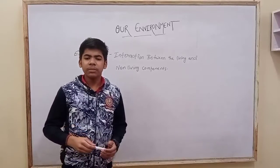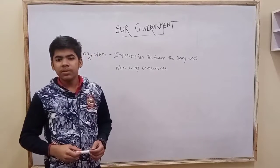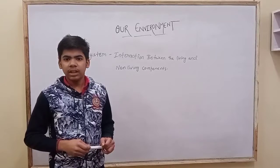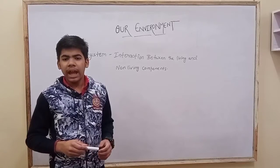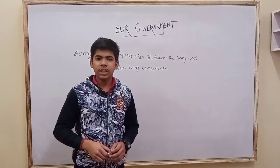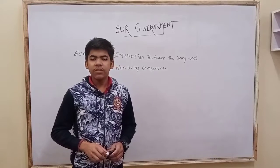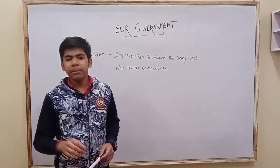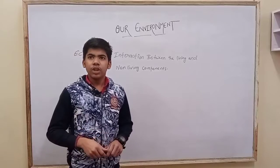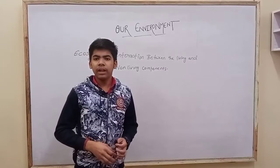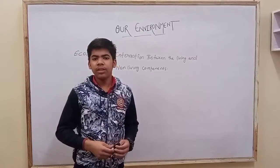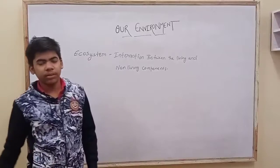Natural ecosystem is the ecosystem occurring in nature, like rivers and forests. Artificial ecosystem is the ecosystem made by human beings, like ponds, parks, and picnic spots.